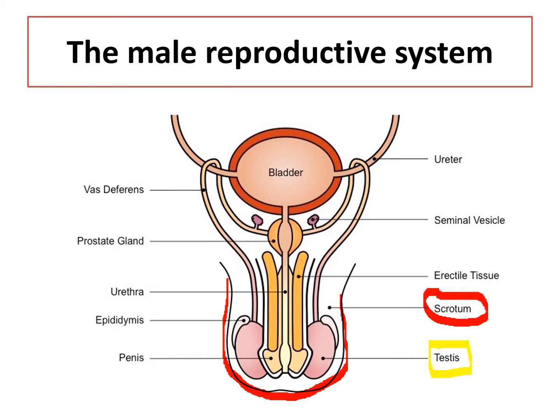The primary function of the testis is to produce sperm, but as a secondary function it also produces the hormone testosterone. Testosterone is responsible largely for the secondary sexual characteristics that take place in boys during puberty, which include an increase in muscle mass, a deeper voice, enlargement of the penis, and growth of hair in certain regions.